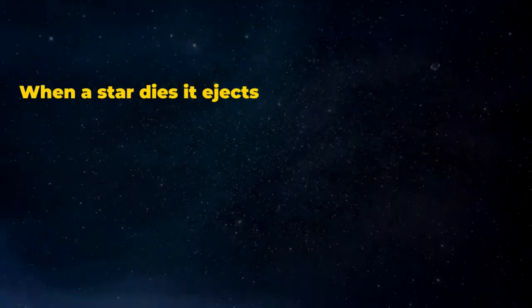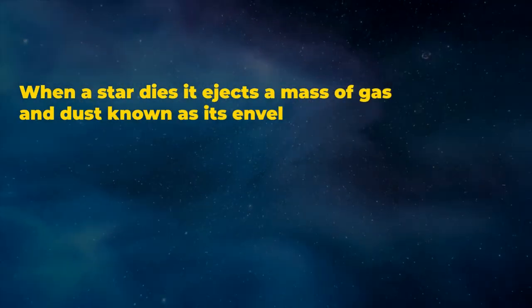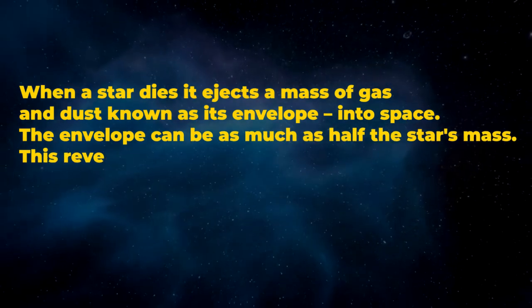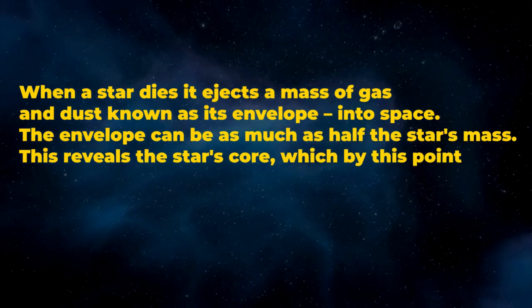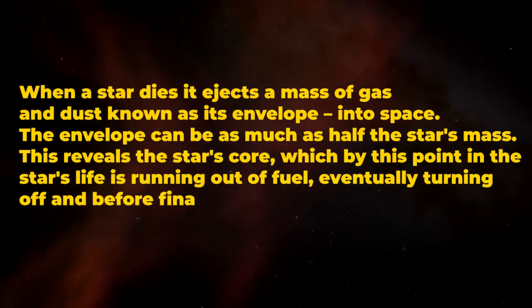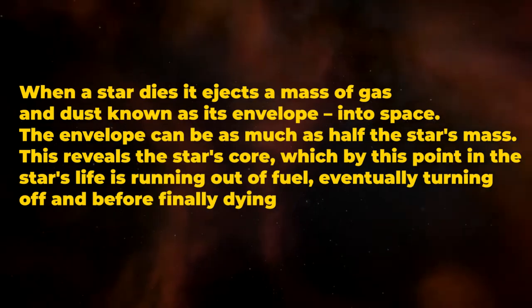When a star dies, it ejects a mass of gas and dust known as its envelope into space. The envelope can be as much as half the star's mass. This reveals the star's core, which by this point in the star's life is running out of fuel, eventually turning off and before finally dying, said Albert Zellstra.